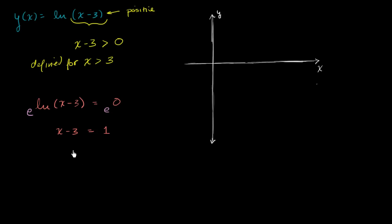So x minus 3 is equal to 1, add 3 to both sides, you get x equals 4. So we know that the point 4 comma 0 is on this graph, so let me graph that.